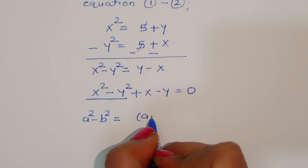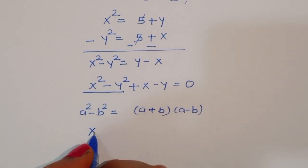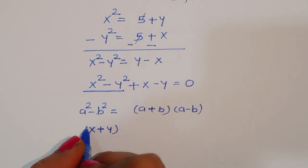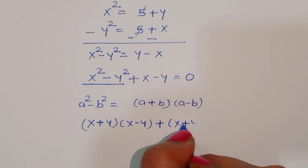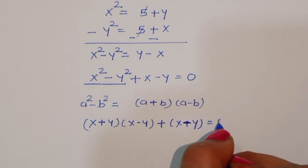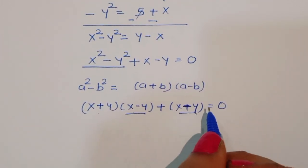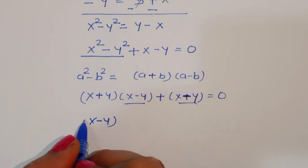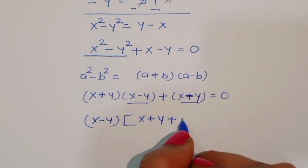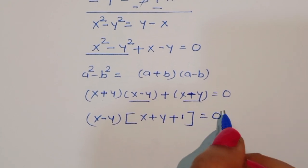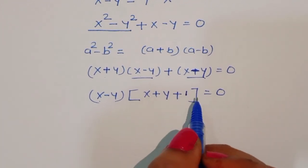Now, x² minus y² — we know the formula: a² - b² = (a + b)(a - b). Using this formula, we get (x + y)(x - y) + (x - y) = 0. Taking (x - y) common, we get (x - y)(x + y + 1) = 0.